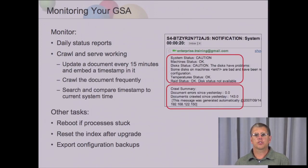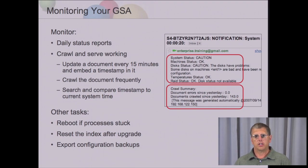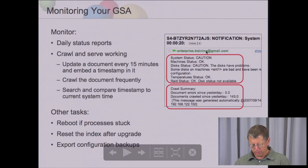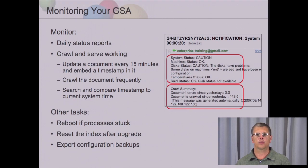Now, how to monitor the search appliance. You can go into the administration console and look at various status reports. You can also set up an email notification — we saw how to do this in the initial network setup module. This is only a short brief report: it tells you the conditions of the hardware, whether the disks are working, whether the RAID array is working, the temperature on the box, and if there is any system failure. But it doesn't tell you if crawling and serving is running.